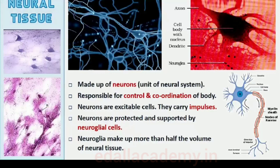Neural tissue exerts the greatest control over the body's responsiveness to changing conditions. Neurons, the unit of the neural system, are excitable cells. The neuroglial cells, which constitute the rest of the neural system, protect and support neurons, making up more than one half the volume of neural tissue in our body. When a neuron is suitably stimulated, an electrical disturbance is generated which swiftly travels along its plasma membrane, triggering stimulation or inhibition of adjacent neurons and other cells. You will study the details in chapter 21.